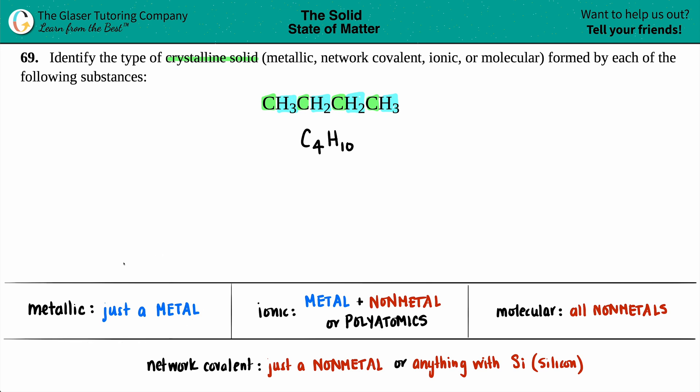Is it a metallic crystalline solid? Well, the word metal is in the word metallic. So in order to be a metallic crystalline solid, you have to just have a single metal. But if I look on the periodic table, carbon is a nonmetal, and hydrogen, even though it's in group one, it's also another nonmetal.